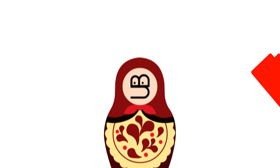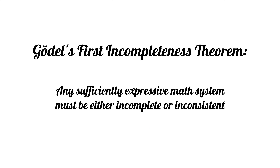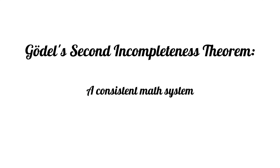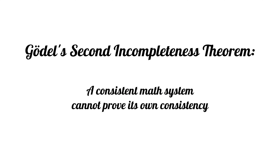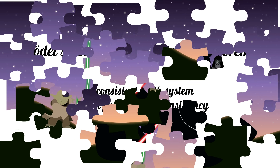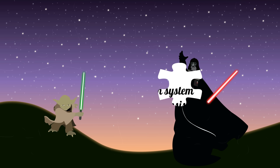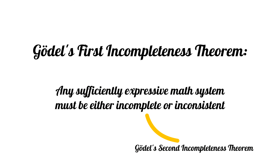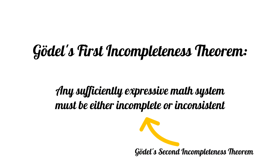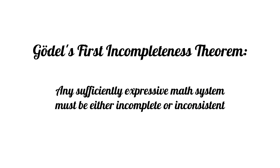Forced to accept the incompleteness of our system, let's turn back to consistency. We would like to patch that hole at least, so let's prove that our system is consistent for peace of mind. Unfortunately again, Gödel's second incompleteness theorem tells us that a consistent math system cannot prove its own consistency. We really need our system to be consistent, but if it were, we'd never be able to prove it with that system. We'd prefer our system to be incomplete over inconsistent, and being unable to prove its consistency is an example of its incompleteness. So we'll have to work in a math system with the lingering possibility that it might be inconsistent, and there's nothing we can do about it.